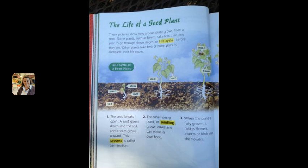Two, the small young plant or seedling grows leaves and can make its own food. Three, when the plant is fully grown, it makes flowers. Insects or birds visit the flowers.